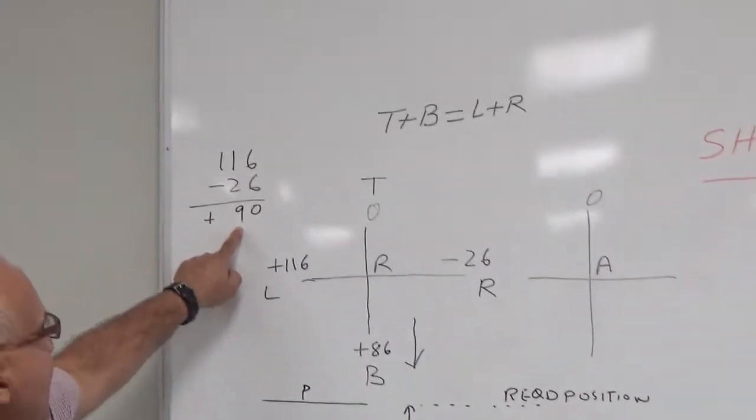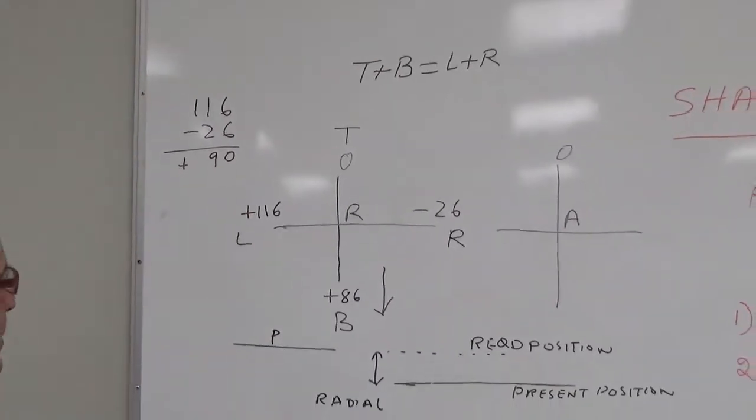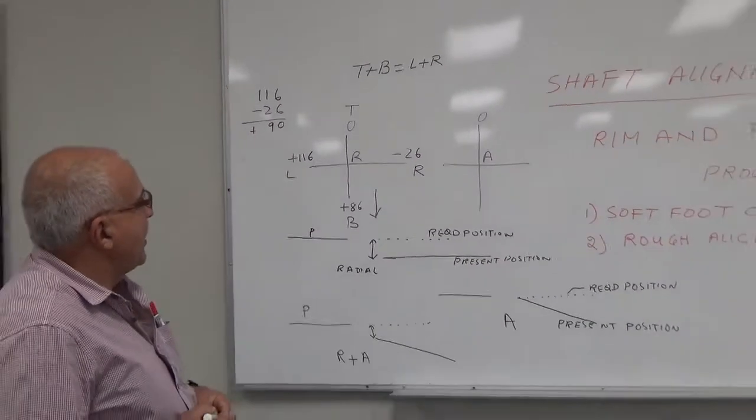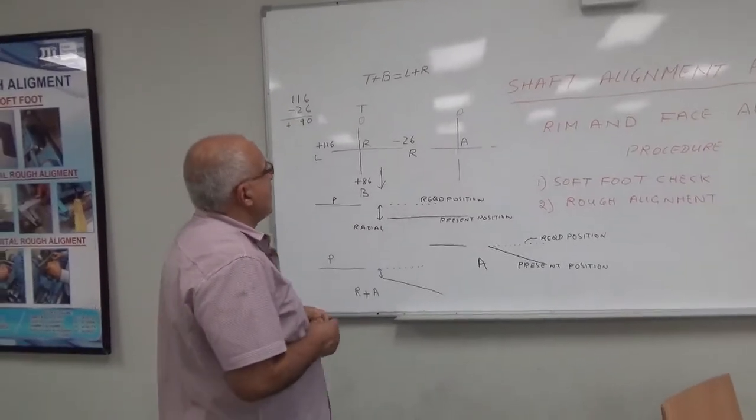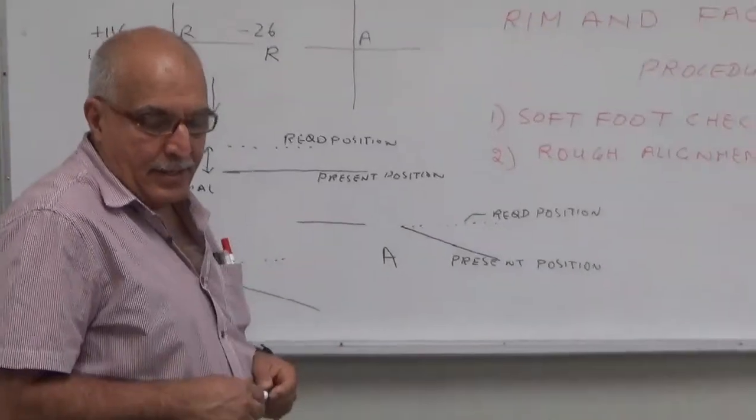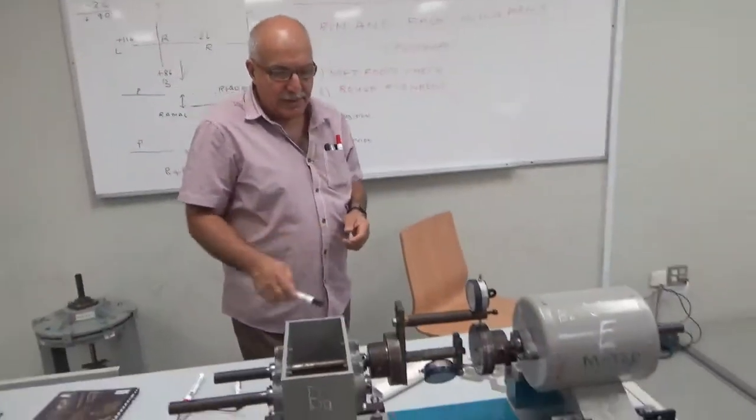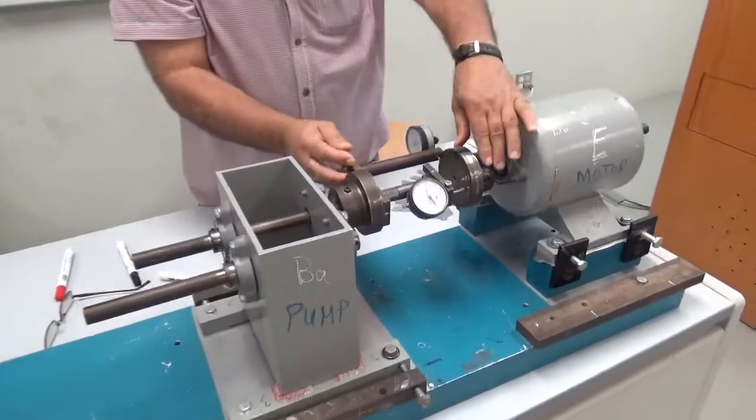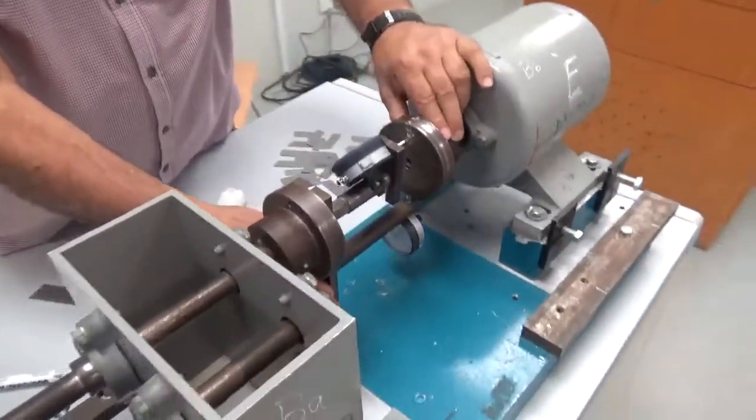There is not too much difference between plus 90 and plus 86. After this we will take the angular reading. We will start from the top.